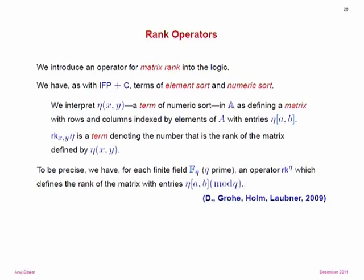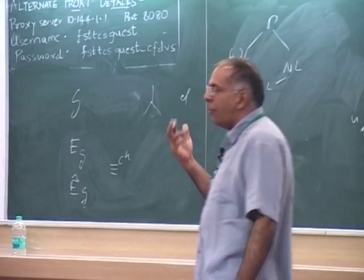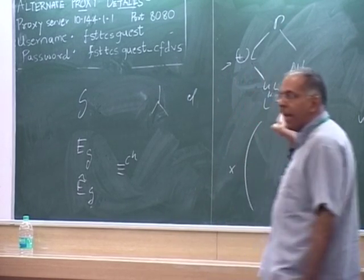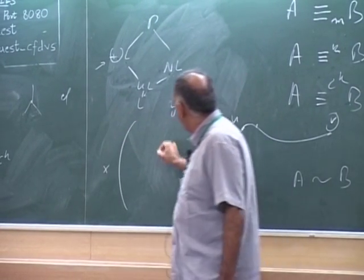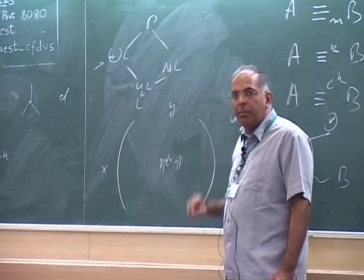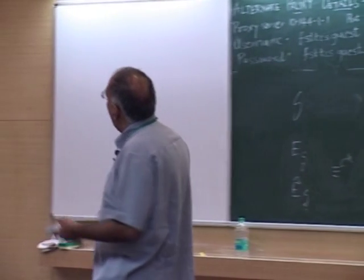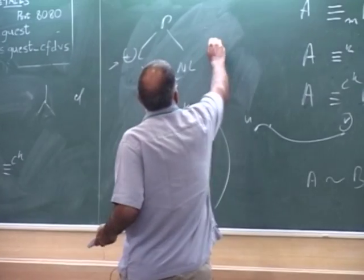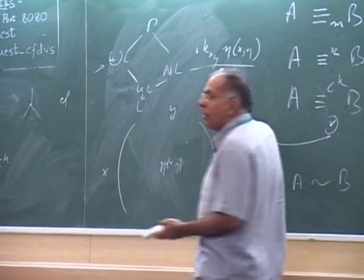The definition is as follows. As with fixed-point and counting, we have terms of element sort and numeric sort — it's a two-sorted logic. If you have a term of numeric sort eta(x,y), where x and y are variables of element sort, we think of this as defining a matrix where x and y range over elements of A, and the entries are given by the numbers obtained by evaluating eta at x and y.